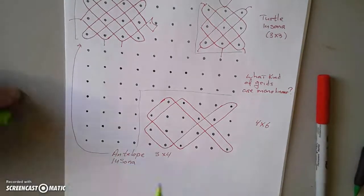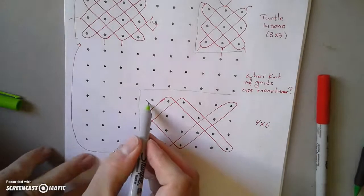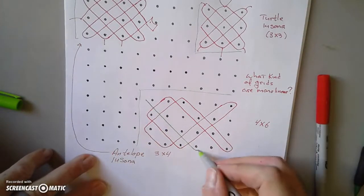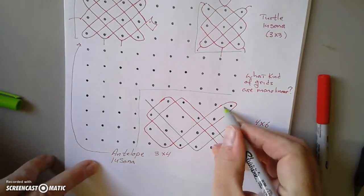Let's use another color. Let's start up here. So this grid is not going to result in a monolineal design.